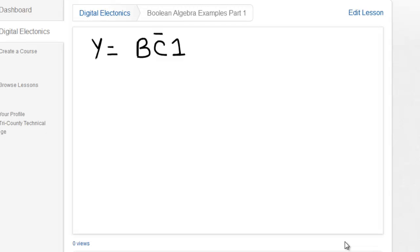So now let's look at this rule. We have y is equal to b and not c and 1. So x and 1 is equal to x. So that means that not c and 1 is going to be equal to not c. So if I just replace not c and 1 with not c, I get for my final answer y is equal to b and not c.